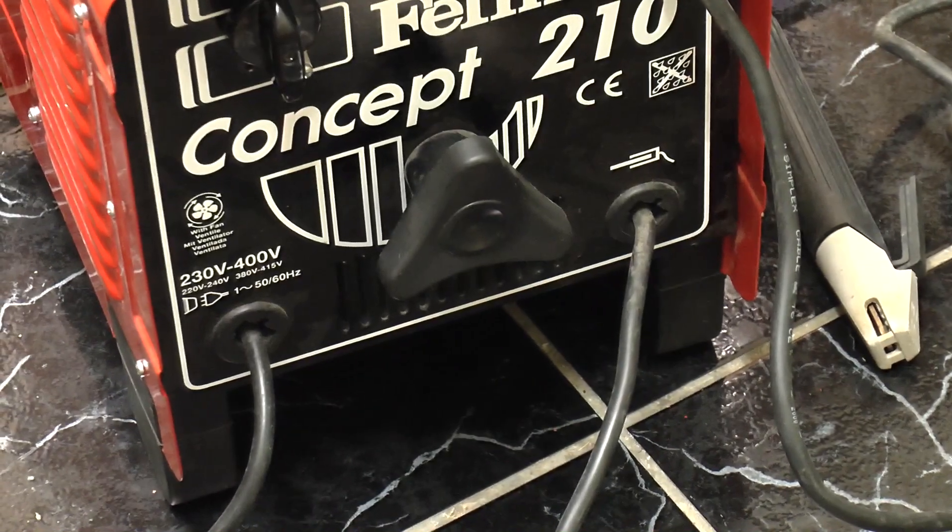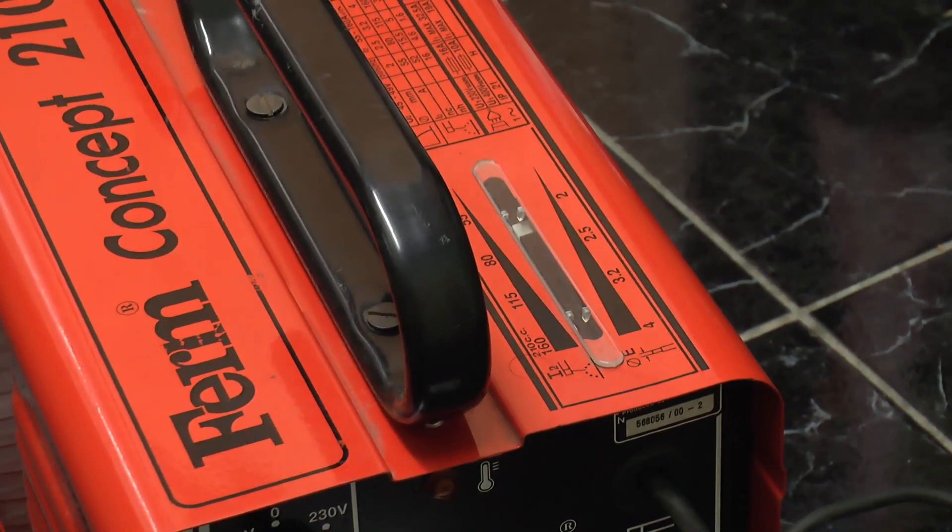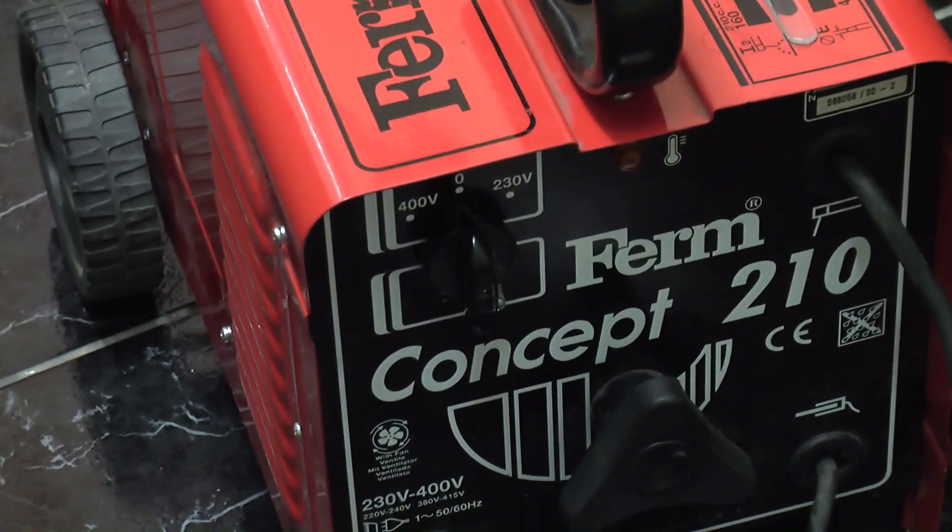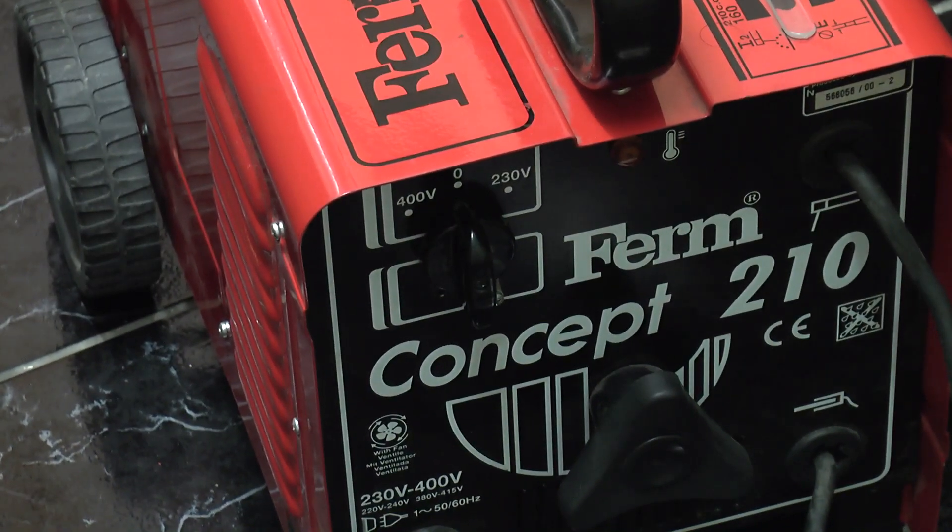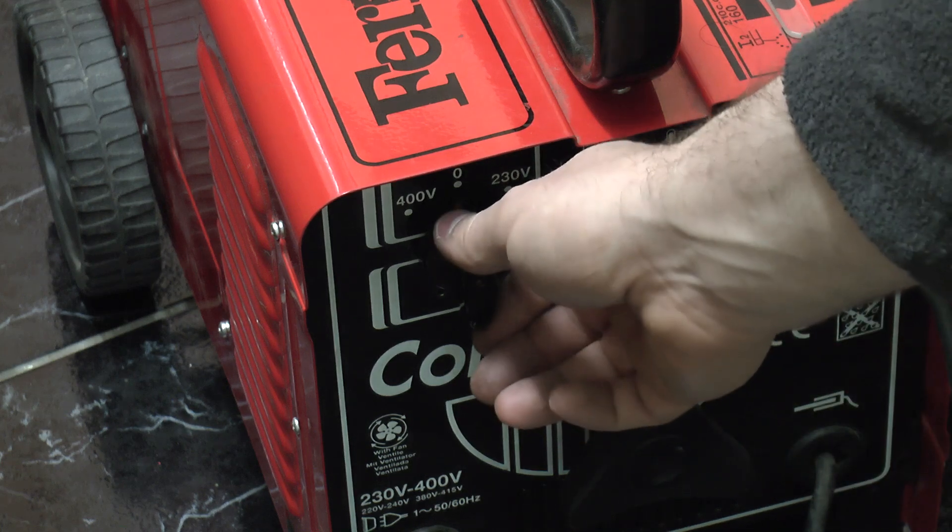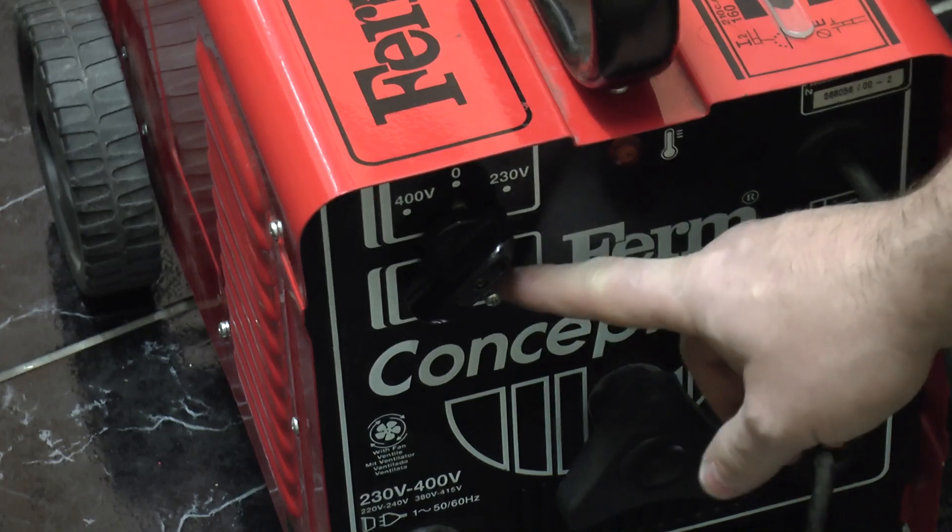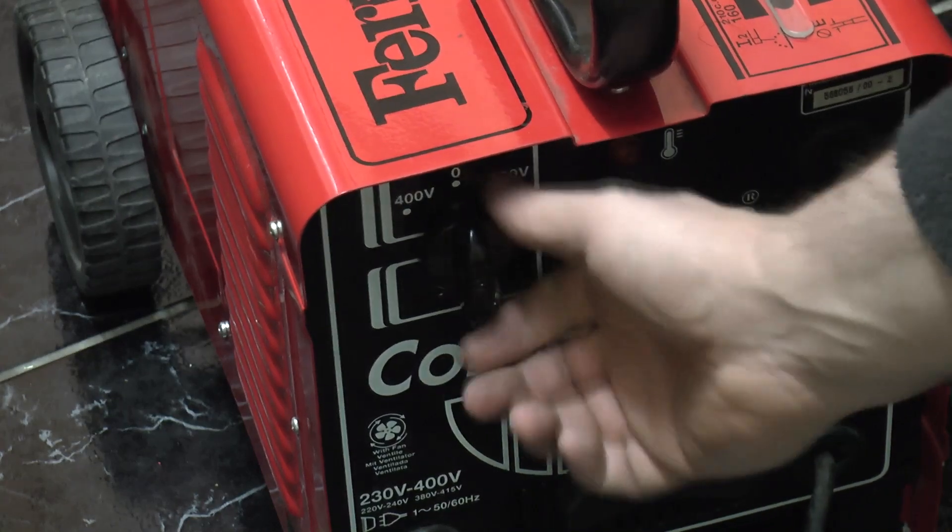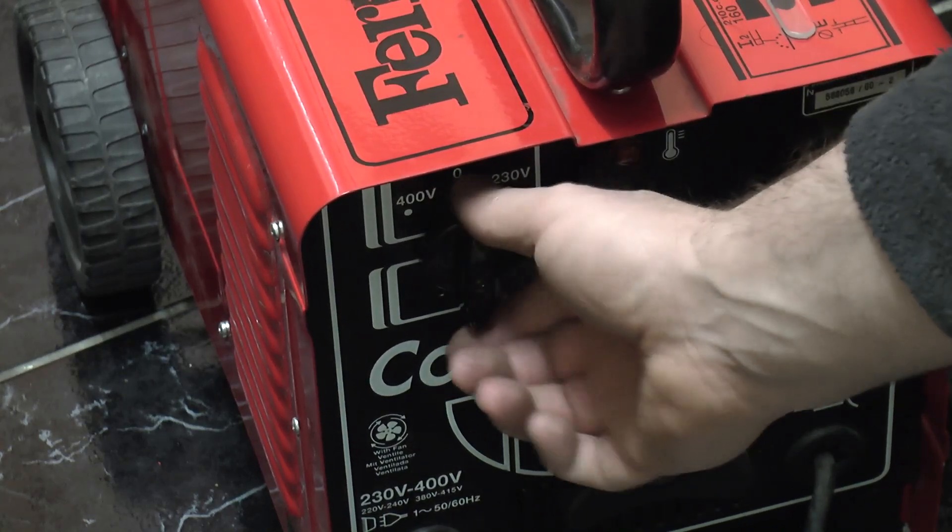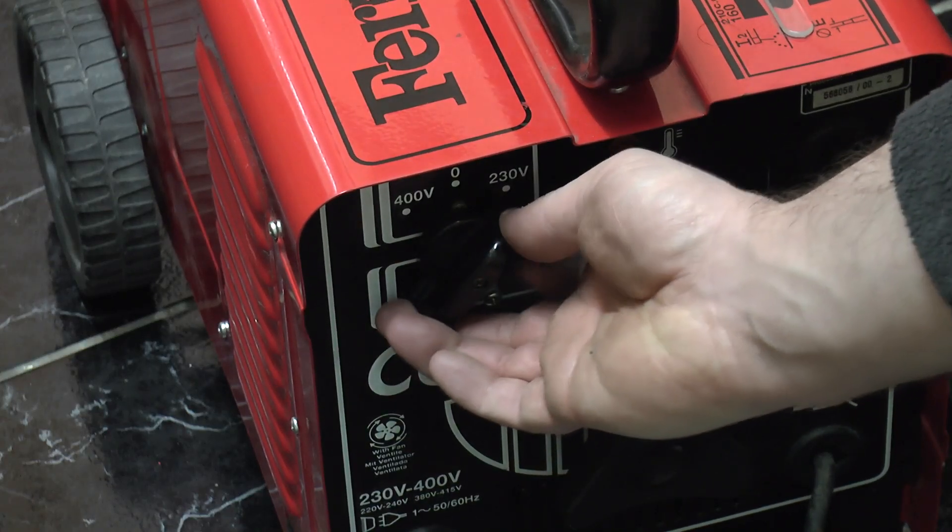In the middle we have a large hand wheel for adjusting the welding current, and on the top a sliding indicator which shows what that welding current is set to. A small screw is fitted at the front of the on/off switch so you can only select whichever voltage you've got it wired for. If you remove this screw and move it to the other side you can use it as a 400 volt welder instead, but as you can see at the moment it doesn't want to go there. Only on the 230.